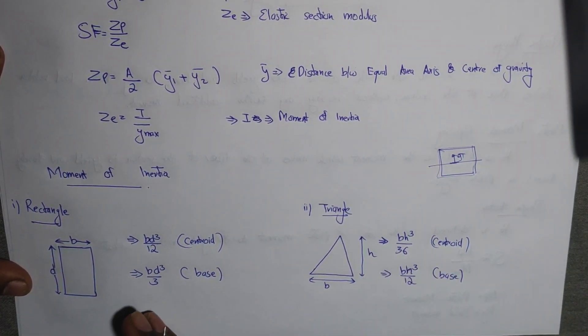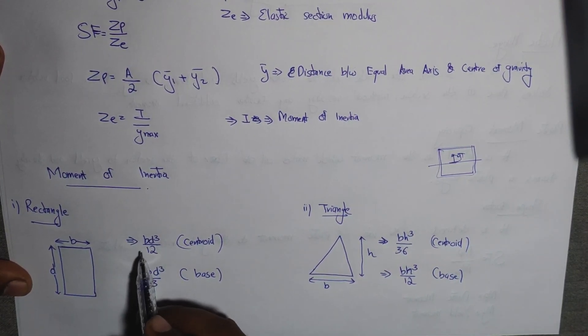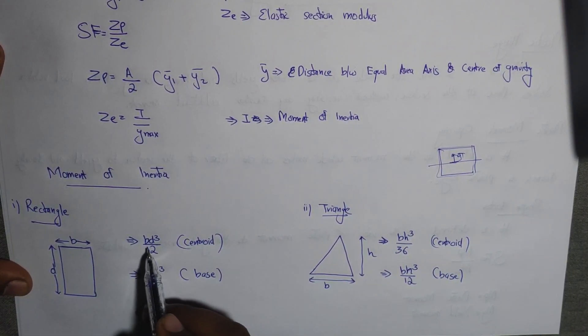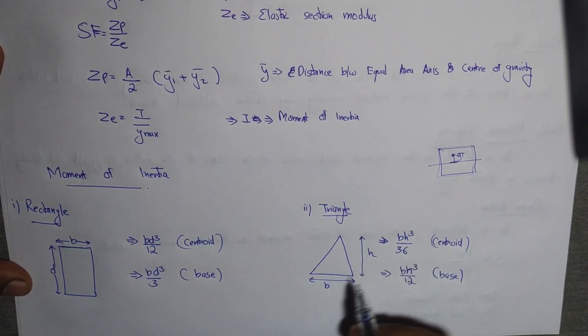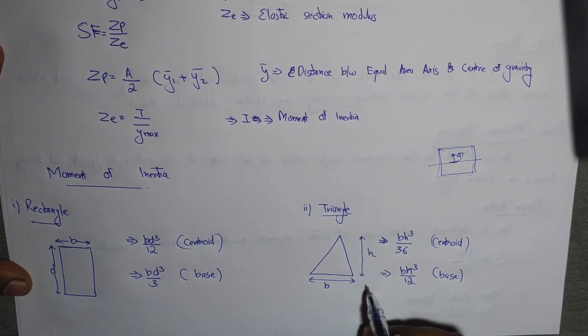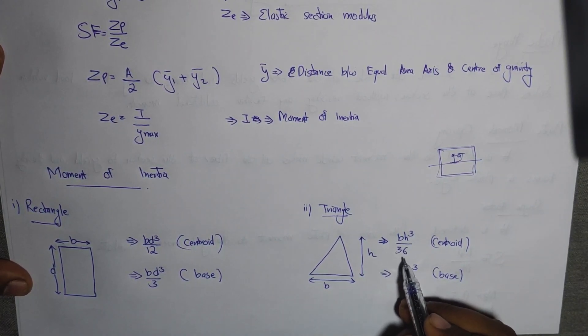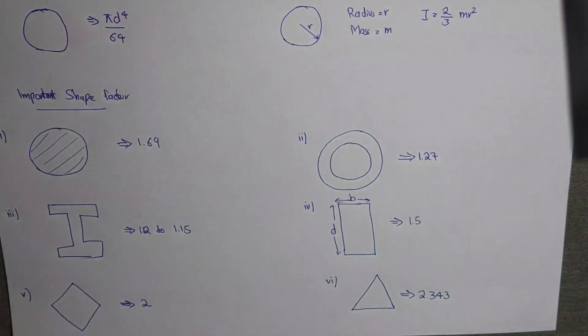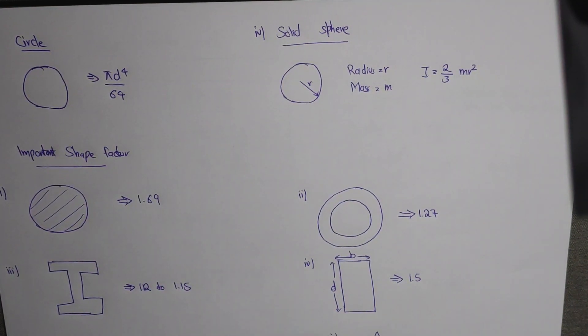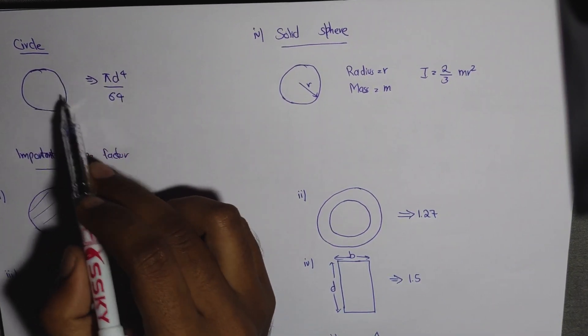For calculating shape factor, consider different cross-sections. For a rectangle, the moment of inertia formula involves bd squared by 12. For a triangle, similar calculations apply based on the section properties.